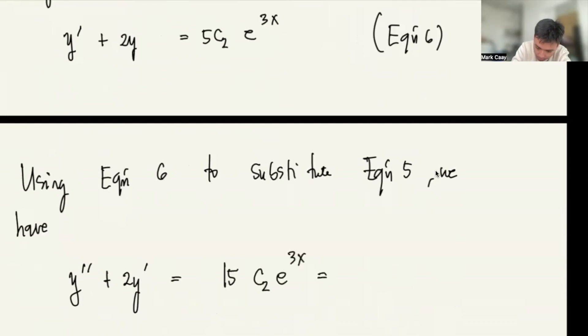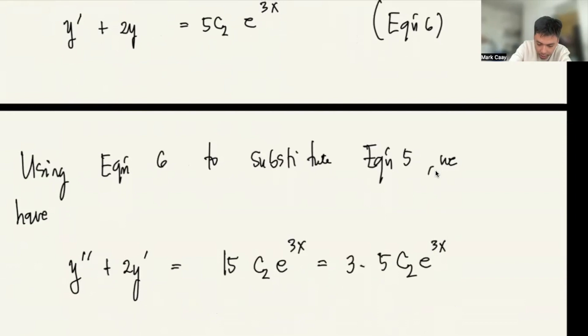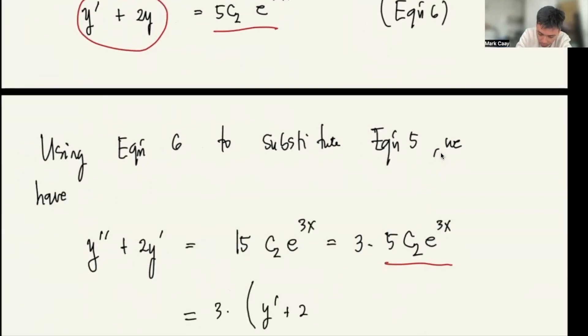I can write this as 3 times 5c2 e to the 3x. But we know that 5c2 e to the 3x can be replaced. So therefore this equals 3 times y prime plus 2y.